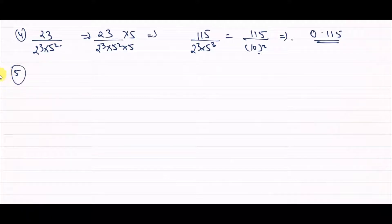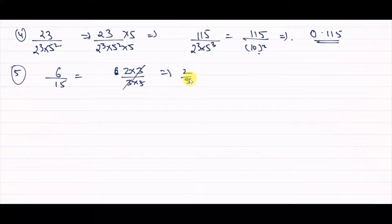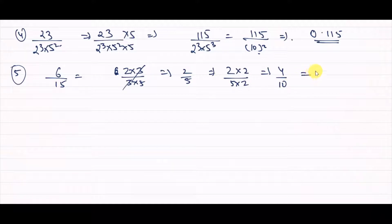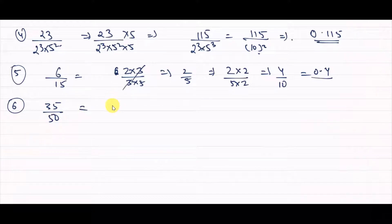In this way, we will do question number 6: 6 upon 15. First, let us simplify: 6 is 2 into 3 and 15 is 3 into 5. The 3 cancels, giving us 2 upon 5. This is the simplified form: 2 into 5 ratio gives denominator 10. So numerator becomes 4 and denominator becomes 10, giving 0.4.